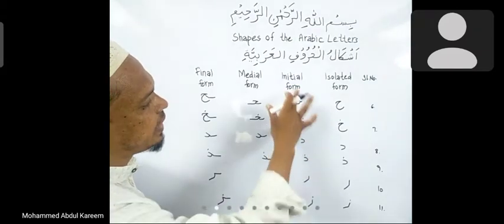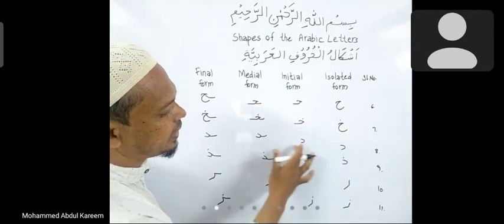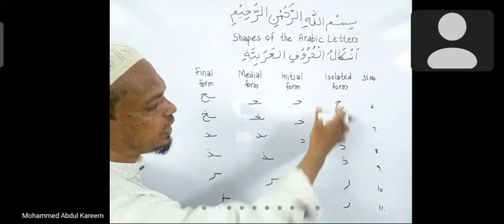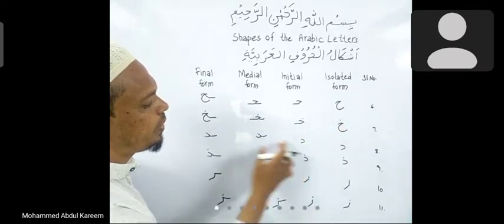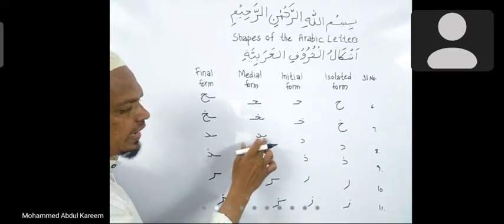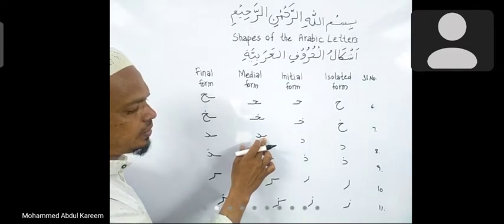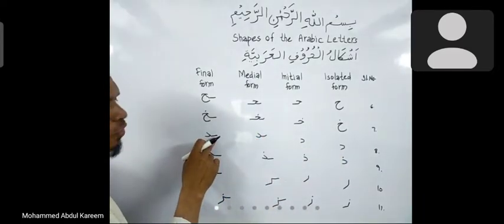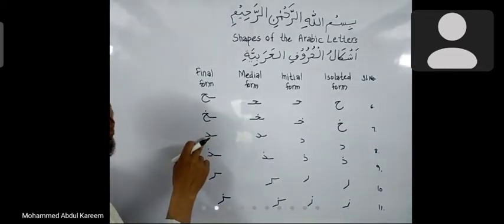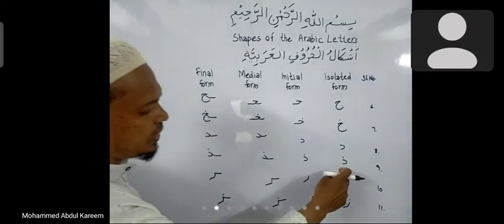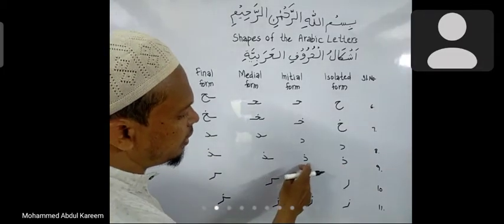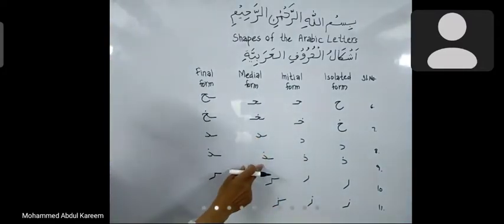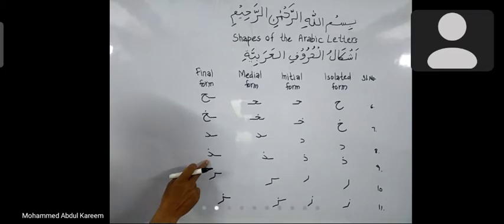For example, you may observe dal here. Dal is similar in isolated form and in medial form, except for the line of the previous letter. Dal is in complete form. So we have: dal isolated form, dal initial form, medial form of dal, and final form of dal.